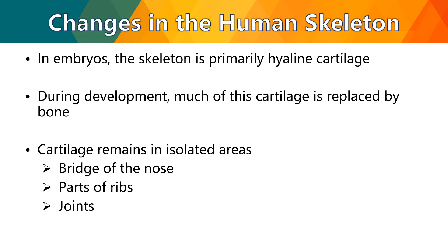For changes in the human skeleton: in embryos, the skeleton is primarily hyaline cartilage. During development, much of this cartilage is replaced by bone. Cartilage remains in isolated areas like the bridge of the nose, parts of the ribs, and the joints.